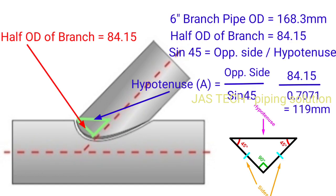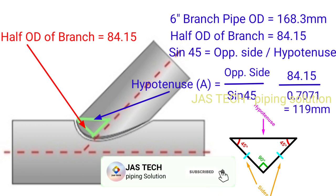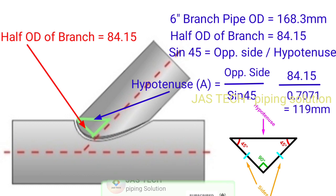Next we want to find out branch side A distance. 6 inch branch OD is 168.3mm. This half OD is 168.3 divided by 2, so 84.15mm. So sin 45 equals opposite side divided by hypotenuse.